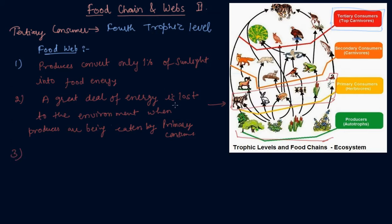So the third point is therefore an average of 10% of the food eaten is turned into own body and made available for secondary consumers because secondary consumers will eat the primary consumers.